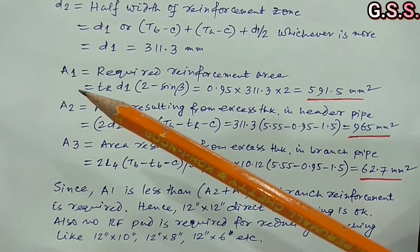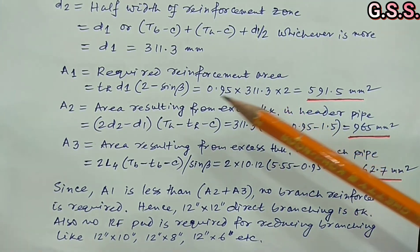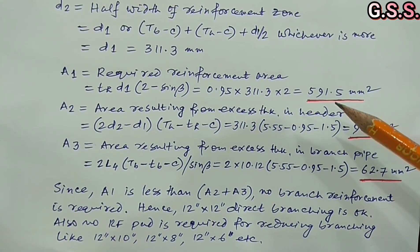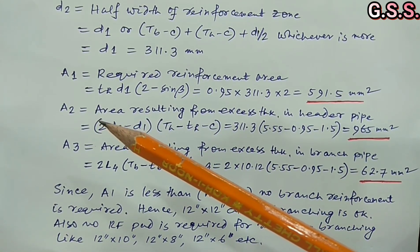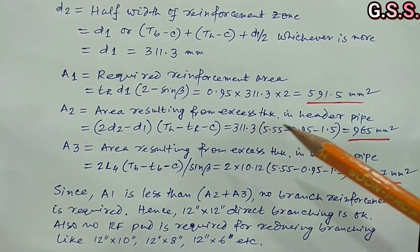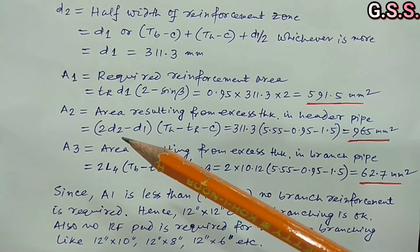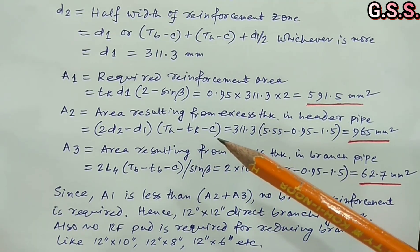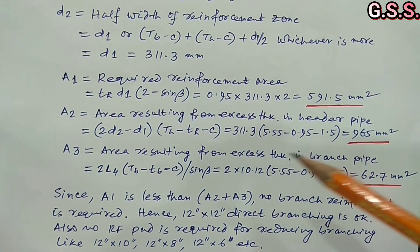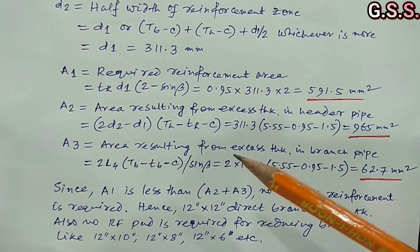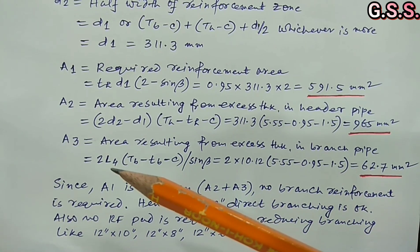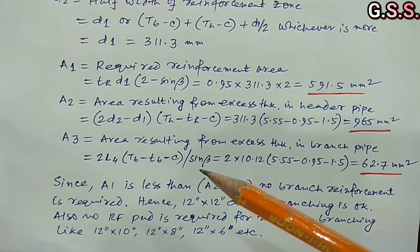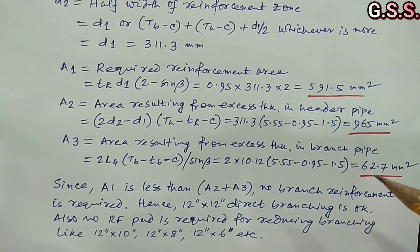Capital A1 = required reinforcement area = small tH × small D1 × (2 − sin β) = 591.5 mm². Capital A2 = area resulting from excess thickness in header pipe = 2 × (small D2 − D1) × (capital TH − small tH − C) = 965 mm². Capital A3 = area resulting from excess thickness in branch pipe = 2 × capital L4 × (capital TB − small tB − C) / sin β = 62.7 mm².